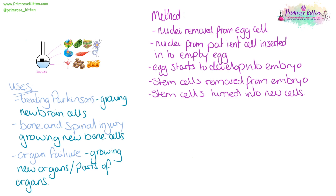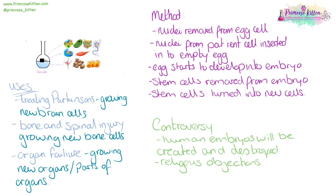If we want to make stem cells, we take a nucleus out of an egg cell, then take a nucleus from the patient's cell and insert that into the empty egg. The egg can then start to develop into an embryo. From this embryo the stem cells are removed and turned into new cells. This does come with quite a lot of controversy because human embryos are going to be created and then destroyed, and there are lots of religious objections — people saying that life starts when embryos are created and objecting to their destruction.